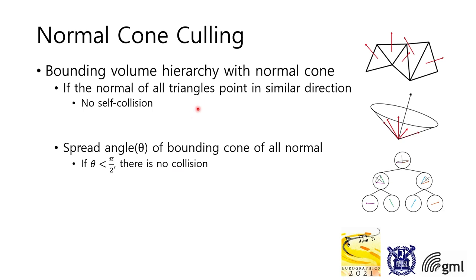Provot and others pointed out that if the triangles' normals point in similar directions, there cannot occur self-collision. More systematically, Provot proposed the use of normal cones with bounding volume hierarchy. If the spread angle of a normal cone is smaller than half pi, there is no collision within included triangles.